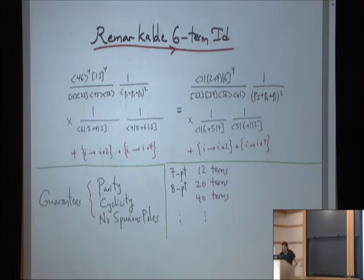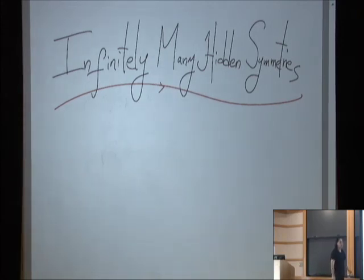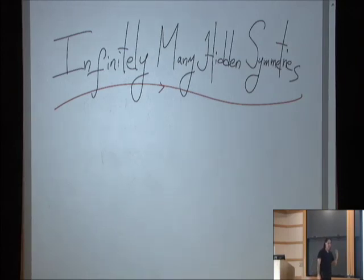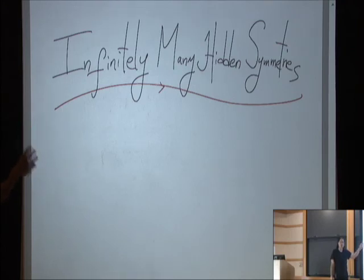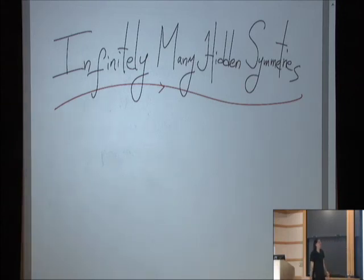At higher points there are more and more complicated identities that are needed, and clearly there needs to be some understanding of what these objects are and where these identities come from. The amplitudes are written in terms of relatively simple objects that can be glued together in interesting ways, satisfy interesting linear relationships, and these relationships guarantee important physical properties like locality. The fact that the answers are so incredibly simple compared to what you would expect from Feynman diagrams is the underlying motivation for seeking a new formulation.